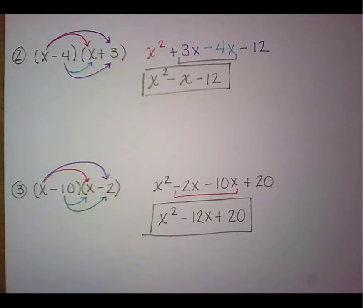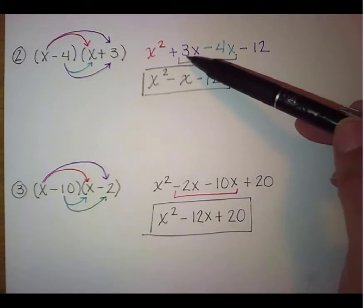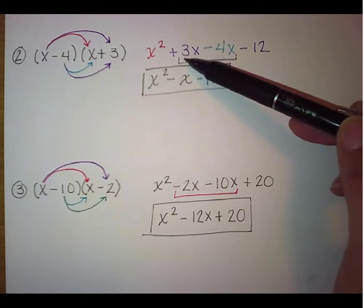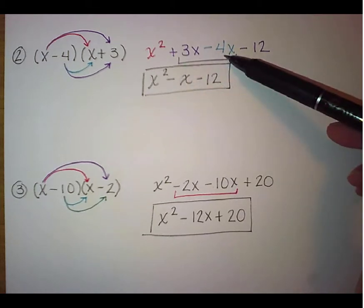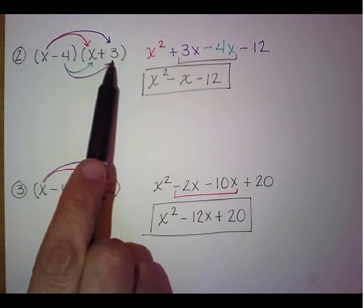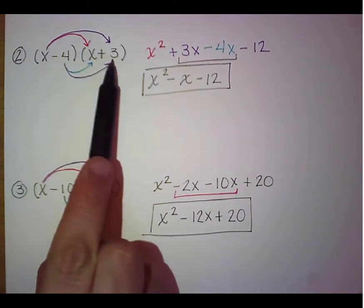So this is very specific cases that this only works on very specific places. Hopefully what you're noticing is that this middle term here we got from adding a positive 3 and a negative 4, and that also happens to be the same numbers that are in your parentheses, a negative 4 and a positive 3.